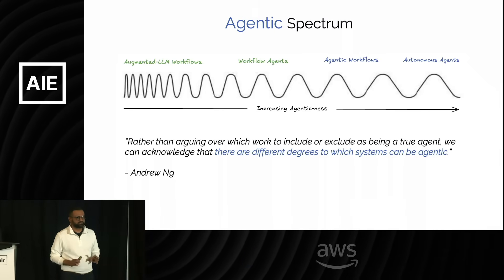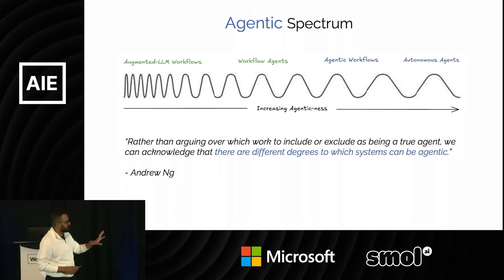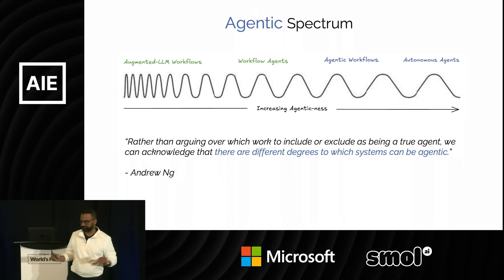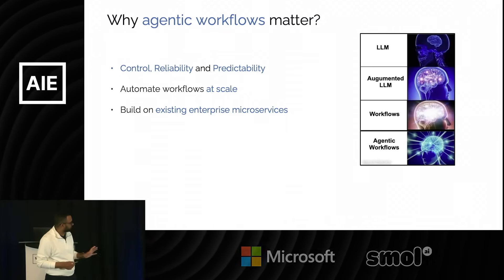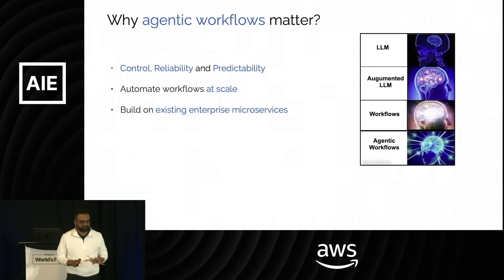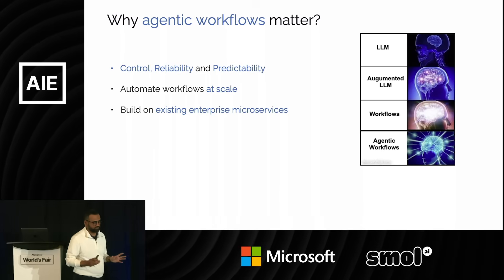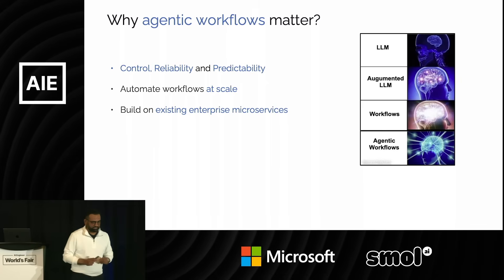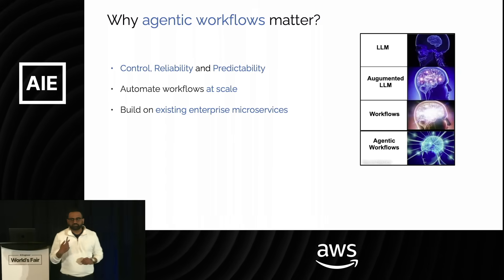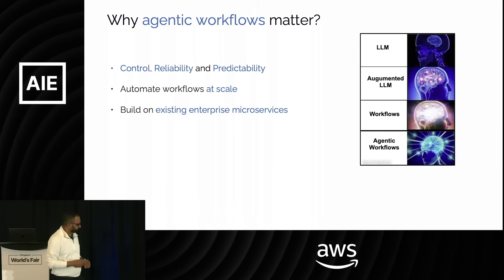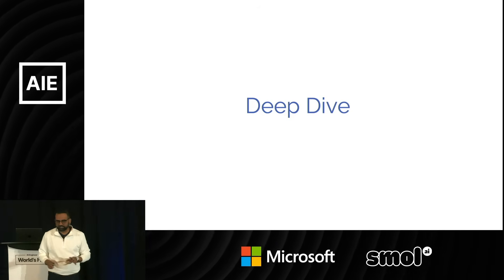It is also important to view these systems as agentic systems. On the agentic spectrum, agentic workflows have more agenticness than workflow agents, generally speaking. For enterprises, apart from control, reliability, and predictability, agentic workflows provide a way to automate workflows at scale. And perhaps most importantly, enterprises can use their existing microservices to build on top of them — and in some cases, these enterprises have invested years, if not decades, in those microservices. Even though I'm speaking in an enterprise context, the concepts are generally applicable.